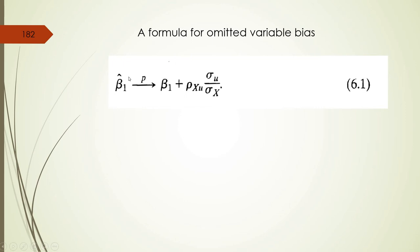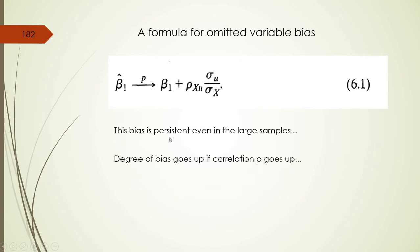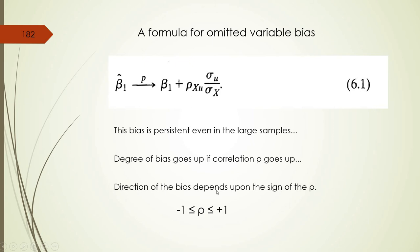The formula for bias shows that our estimate beta-1-hat converges toward the true beta-1 but with some bias — a difference from the true value due to the omitted variable. The symbol rho is the coefficient of correlation between x1 and x2. The higher this coefficient, the bigger the bias. This bias persists even in large samples, its magnitude increases with rho, and its direction depends on the sign of rho.